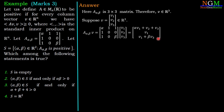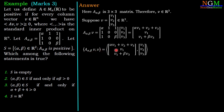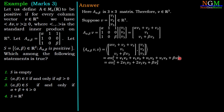Now we compute the inner product ⟨A(α,β)v, v⟩ as a standard dot product. This gives: αv₁² + v₁v₂ + v₁v₃ + v₁v₂ + v₁v₃ + βv₃². Simplifying, we obtain: αv₁² + 2v₁v₂ + 2v₁v₃ + βv₃².